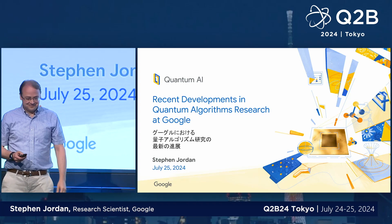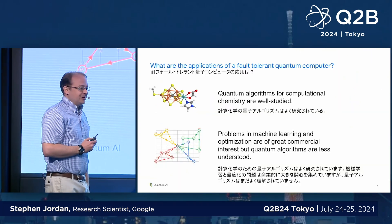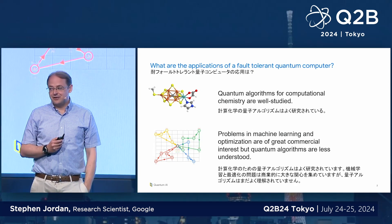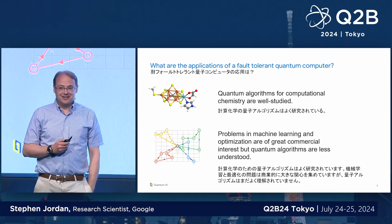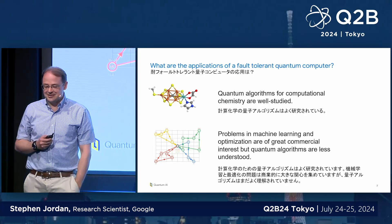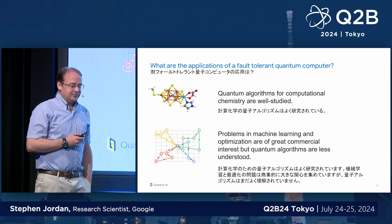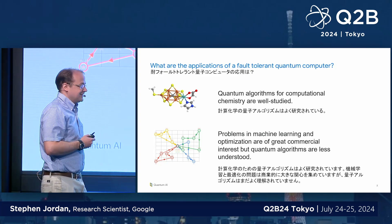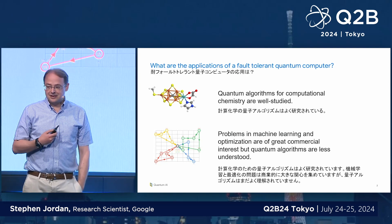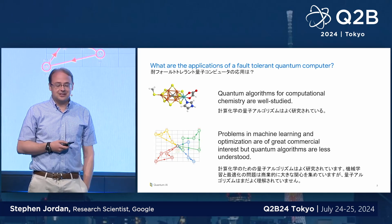All right, thank you. It's good to be here. A big question that we're very interested in at Google is what are the applications of a fault-tolerant quantum computer? We're obviously investing a lot into developing such a device and we want to understand where the value comes from. Perhaps one of the best examples, which has been discussed much at this meeting, is application to computational chemistry and other Hamiltonian simulation problems.